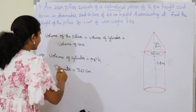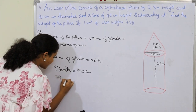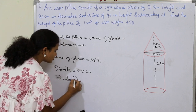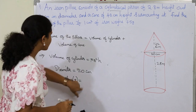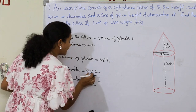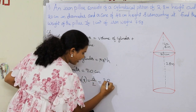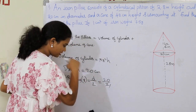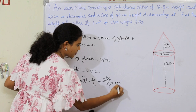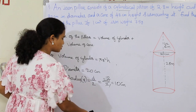So radius equals d by 2, where diameter is 20 centimeters. Therefore 20 divided by 2 gives us radius equals 10 centimeters.